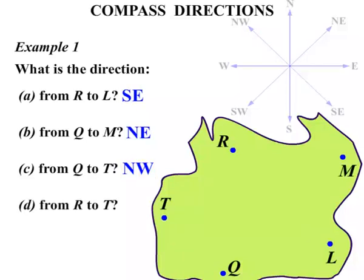What about from R to T? We're going from R towards T. So that arrow direction, repeating that, would be South-West.